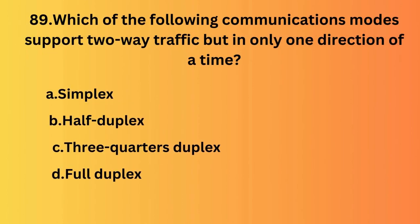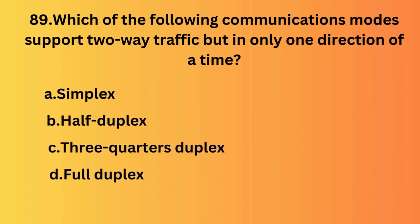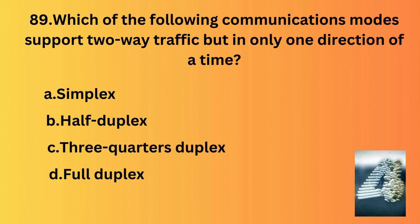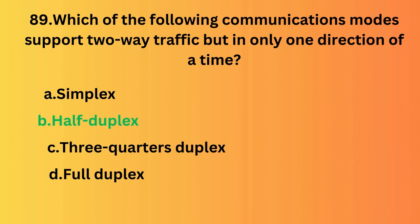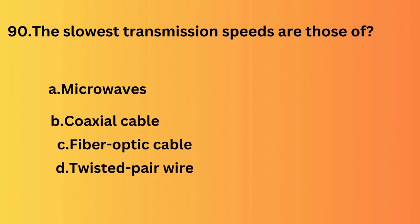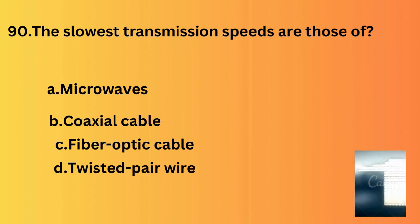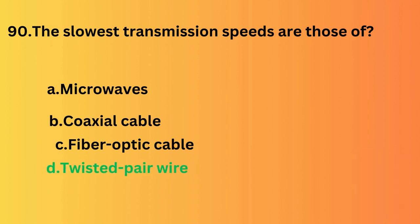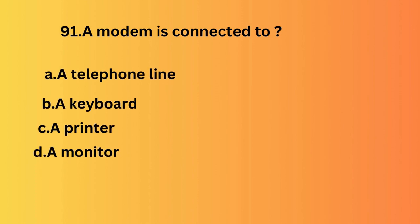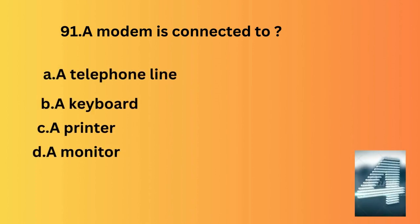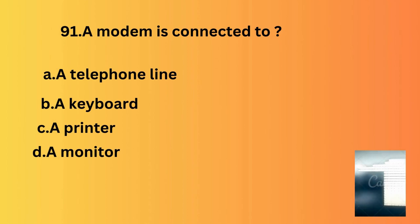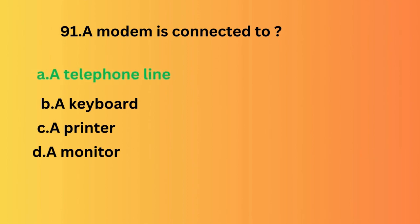Which communication mode supports two-way traffic but in only one direction at a time? The answer is half duplex. The slowest transmission speeds are those of — the answer is twisted pair wire. A modem is connected to — the answer is telephone line.